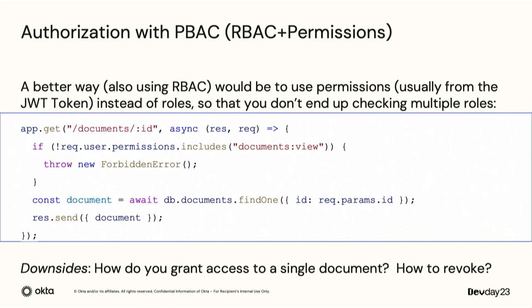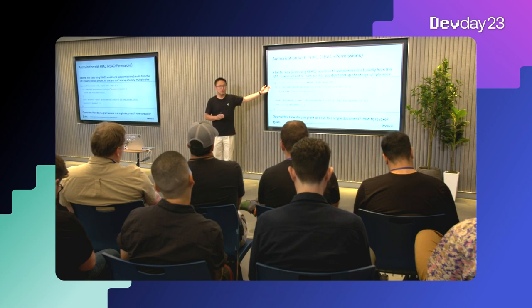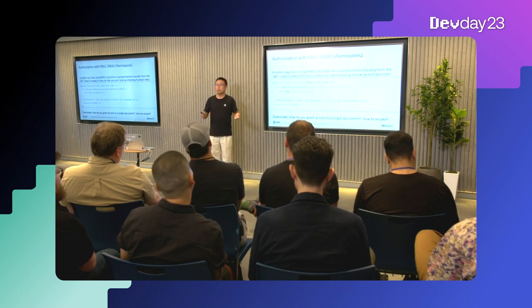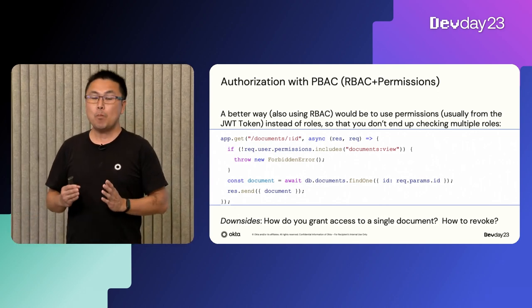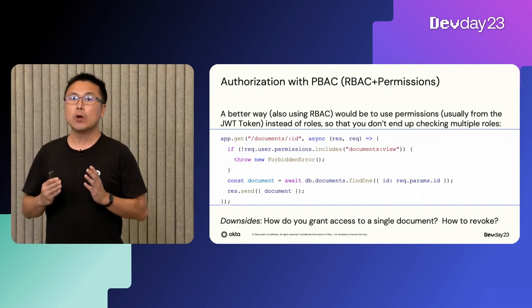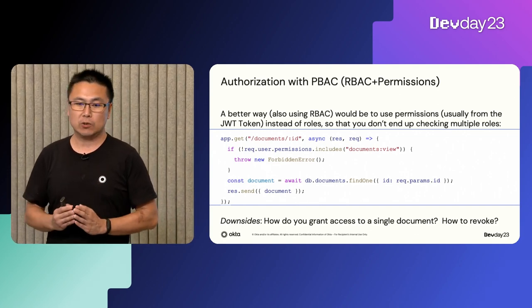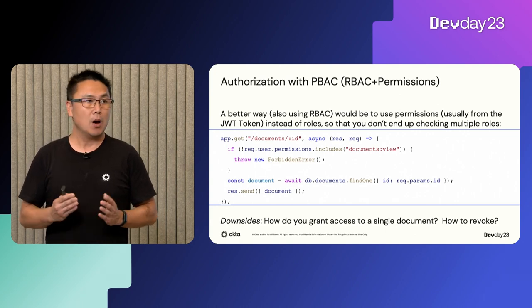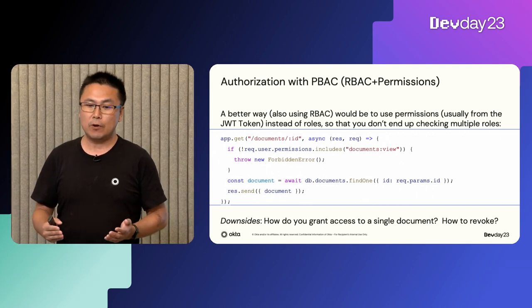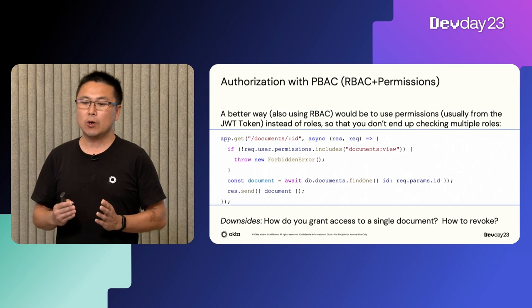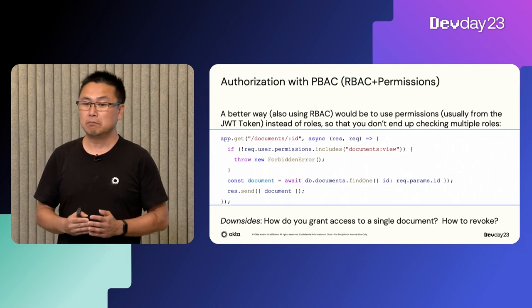However, how do you solve the case where you want to share a single document? And what about revoking the permission? Since the permission is already encoded in the JWT, you will need to wait for it to expire — you cannot revoke it immediately. In general, RBAC is good for situations where you grant broad access to a collection of resources: all managers can approve expense reports, all engineers can view servers, any dev in your organization can view GitHub repositories.